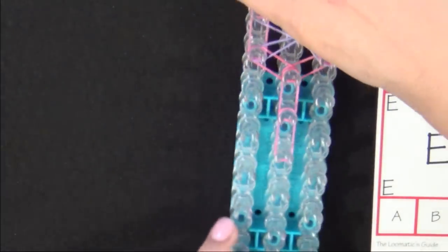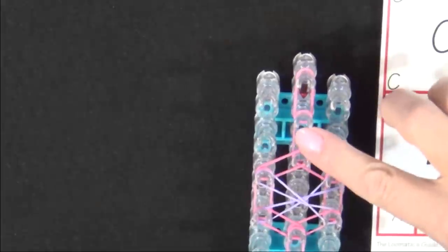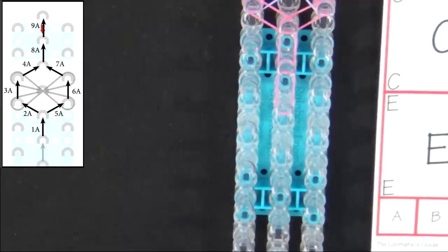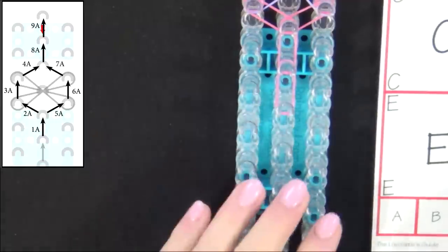Now we're ready to start looping the bands. You'll turn your loom so that the red arrow is pointing toward you. Refer to the diagram on your screen as you loop these 10 bands.